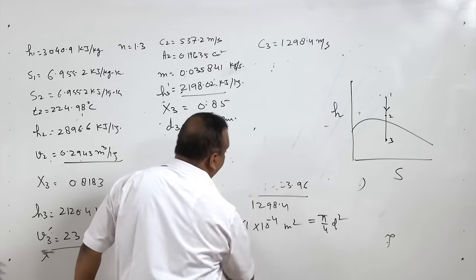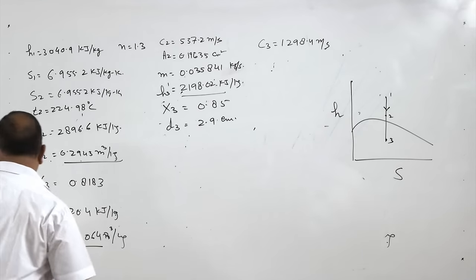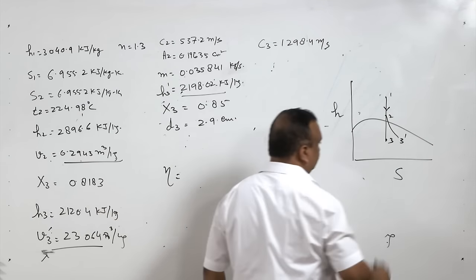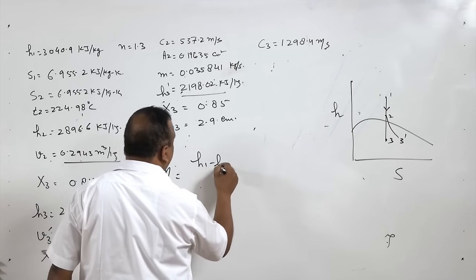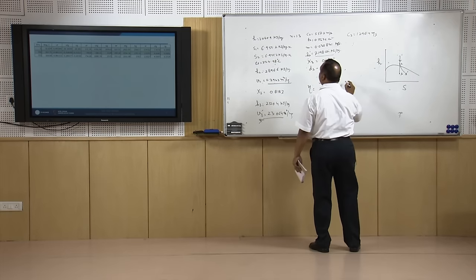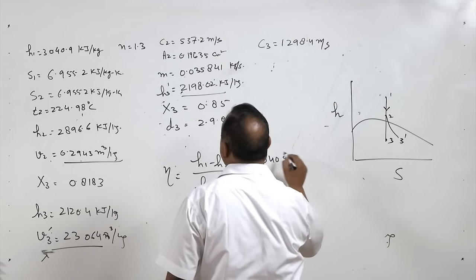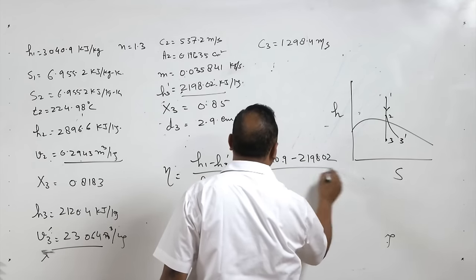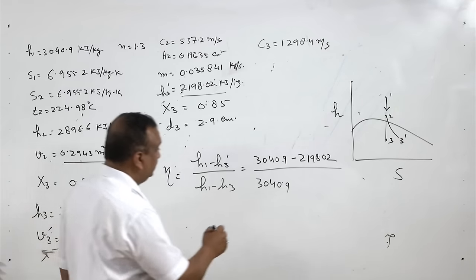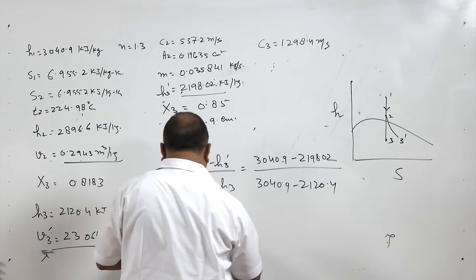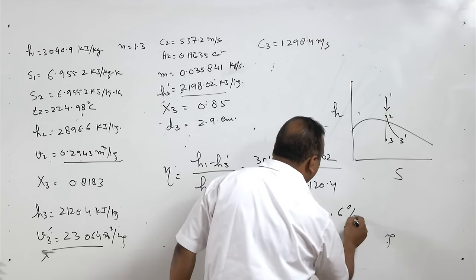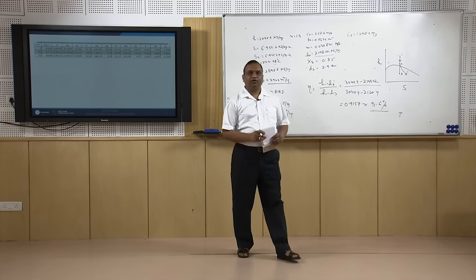Finally, the overall nozzle efficiency is η = (H1 − H3') / (H1 − H3) = (3040.9 − 2198.02) / (3040.9 − 2120.4) = 0.9157, or 91.6 percent. That is all for today. Thank you very much.